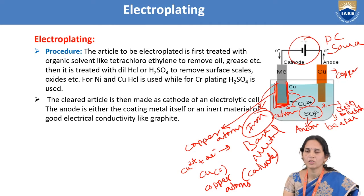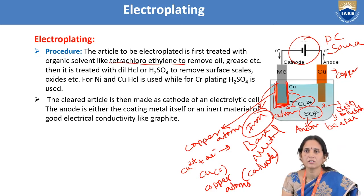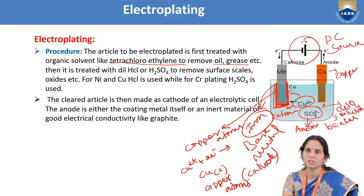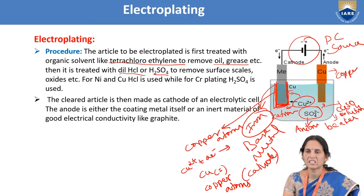In the electroplating procedure, the base metal article is first treated with the organic solvent tetrachloroethylene to remove any oil or grease particles from the surface. Then it is treated with dilute HCl or H₂SO₄ to remove any oxides or scales. For nickel and copper plating, HCl is used; for chromium plating, sulfuric acid is used.